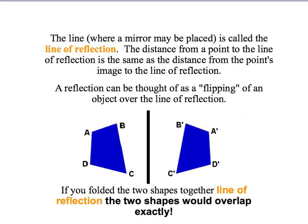This line in the middle between the object and the image we call the line of reflection. If you fold the object along the line of reflection, then the object and the image should overlap.